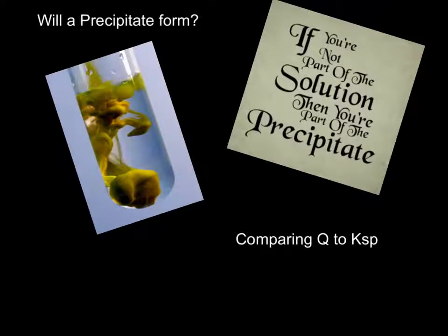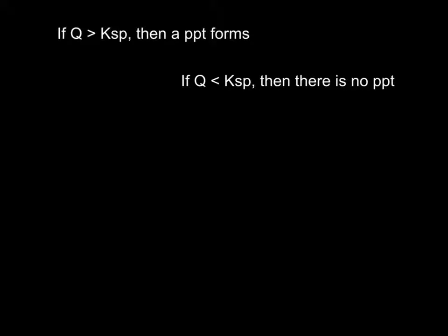Now we're going to look at how we know whether or not a precipitate will form when we combine two solutions. We did this back when we were talking about equilibrium constants — we calculated Q and compared it to the equilibrium constant to decide whether or not the reaction was at equilibrium and which way it would shift. So a similar idea here: we're going to calculate Q.